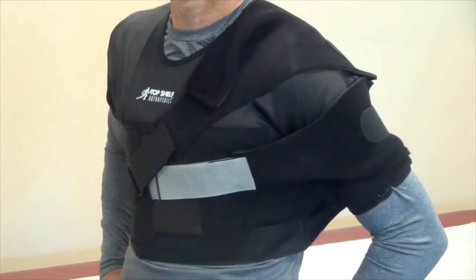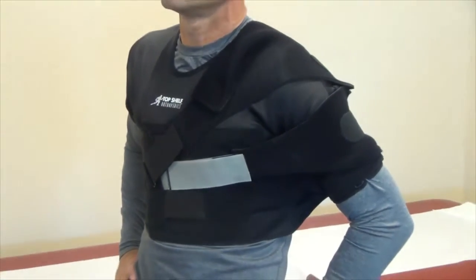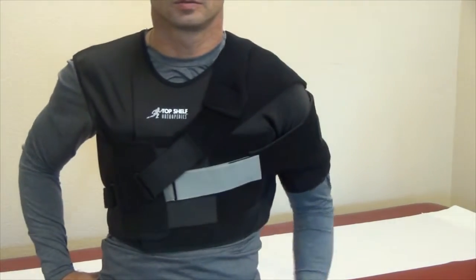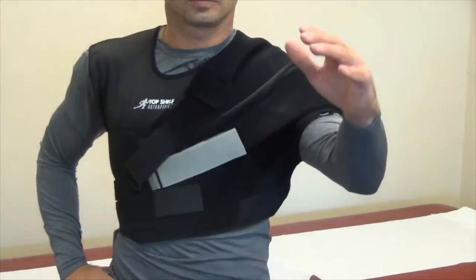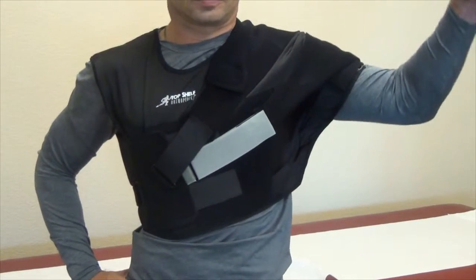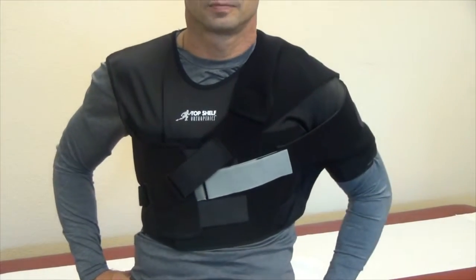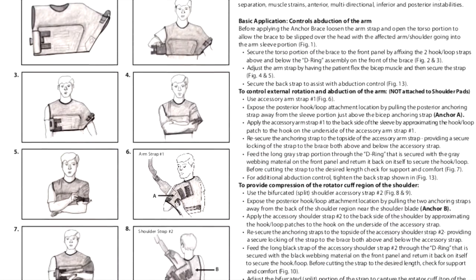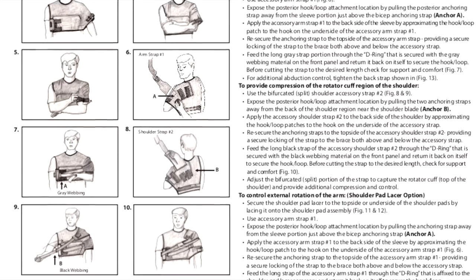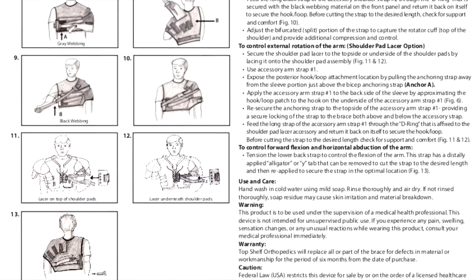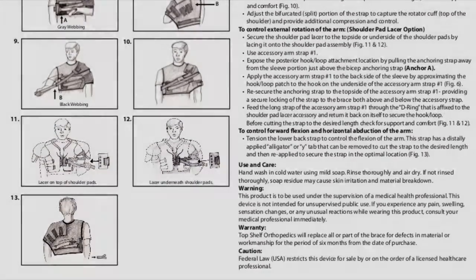Demonstrated here is a properly applied Anker Shoulder Stabilizer Brace, showing abduction control as well as external rotation and forward flexion control. For additional instructions and to familiarize yourself with the application and care of the product, you can reference the directions for use included with this brace.